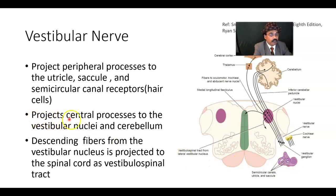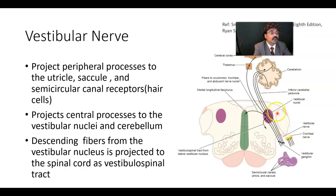Central processes are projected to the vestibular nuclei and the cerebellum. Some fibers go to the vestibular nuclei, some go to the cerebellum, and some return back from the cerebellum — making it a two-way connection to the cerebellum.